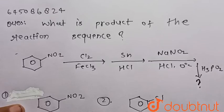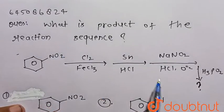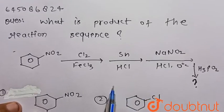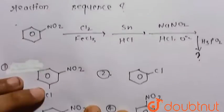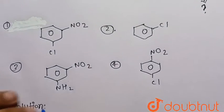Everyone, consider the given question: what is the product of the reaction sequence? This is the given reaction sequence, so we have to find the final product. These four options are given, so we have to find which one is correct.